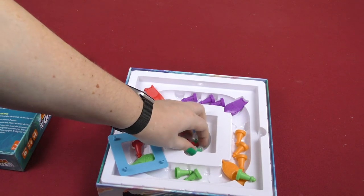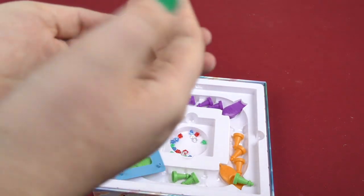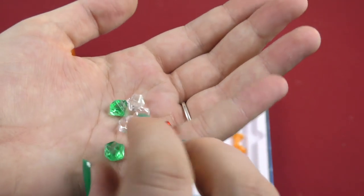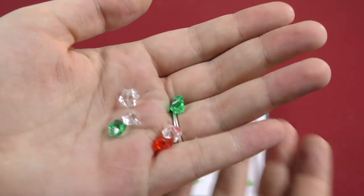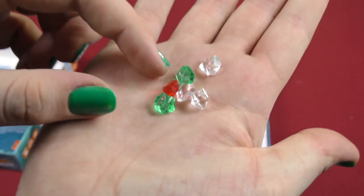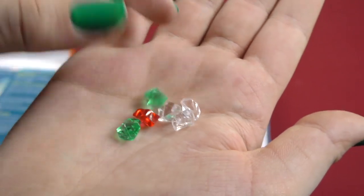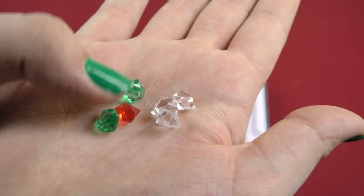And underneath that, we got teeny tiny gems! Normally, I find these type of gems in a lot of games, but these are like the miniature versions of them. And it's super cute! Look at how small these gems are! Like, they're just replicas of the bigger ones, but they're just small!